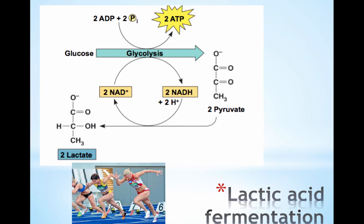Fast muscle fibers use a different type called lactic acid fermentation. The two pyruvates at the end of glycolysis are broken down to create two lactate, or lactic acid, molecules, which also regenerates NAD+. This occurs in the muscles of animals when they are overexerted. The lactic acid produced in muscle fibers is carried in the blood to the liver, where it is converted back to pyruvic acid. Lactic acid fermentation by bacteria is also used in the dairy industry to make cheese and yogurt.